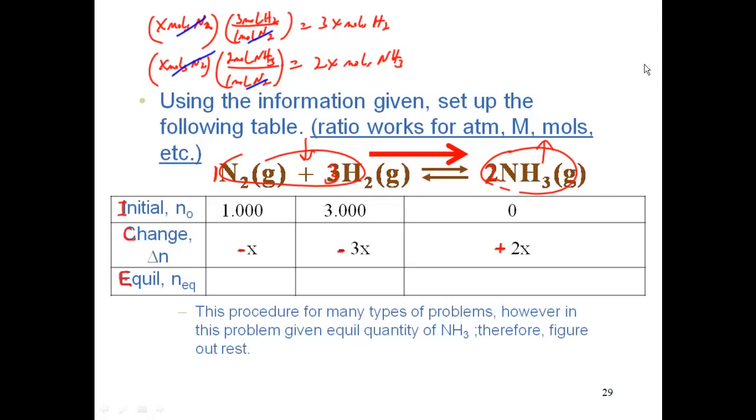So now I know what I have initially and I know what my change is. Now I can figure out what I have at equilibrium by adding the two values. So when I do that, I know I have at equilibrium for nitrogen I have 1.000 - x, for hydrogen at equilibrium I have 3.000 - 3x, and for ammonia I have 2x.